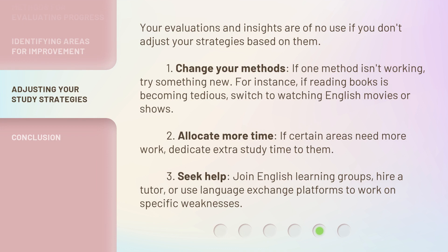Your evaluations and insights are of no use if you don't adjust your strategies based on them. 1. Change your methods — if one method isn't working, try something new. For instance, if reading books is becoming tedious, switch to watching English movies or shows. 2. Allocate more time — if certain areas need more work, dedicate extra study time to them. 3. Seek help — join English learning groups, hire a tutor, or use language exchange platforms to work on specific weaknesses.